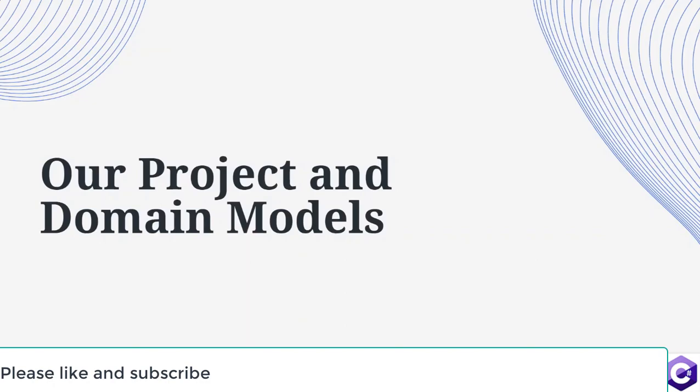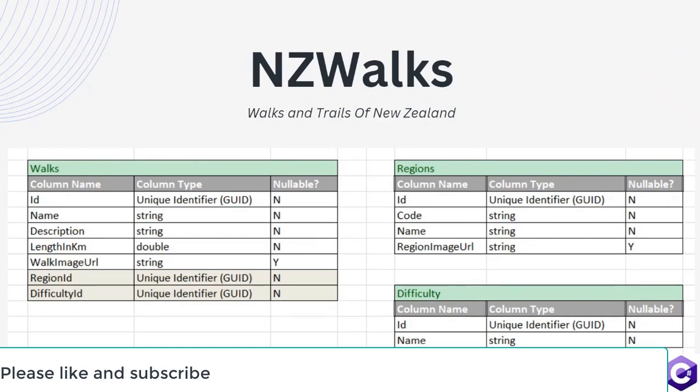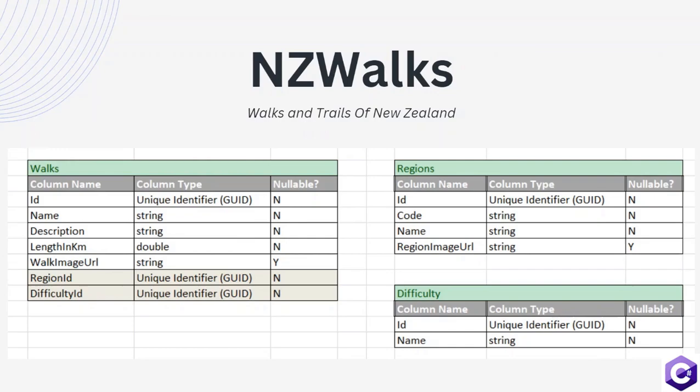Now that we have covered our basics, it is time to dive deep and create a full real-world web API. We will be building a web API that manages the walks and trails of New Zealand. By using this API, the client would be able to create, read, update, and delete walks, regions, or the difficulty for these walks. Let me explain a bit more about the domain of our API.